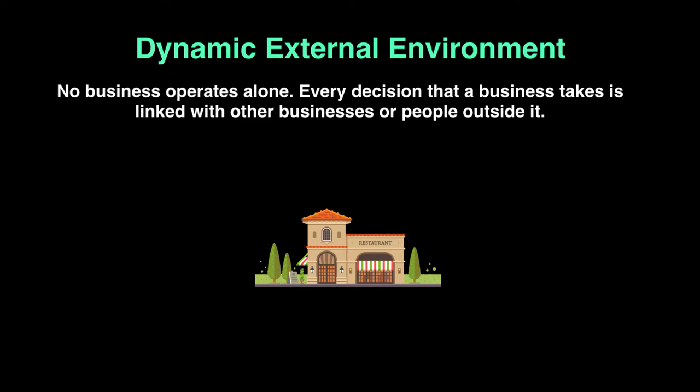Let's say we are a restaurant owner and we'd like to grow — open more branches. That's a good thing, but there are things happening around the business that we must consider. The concept we'll be discussing is called a PEST analysis — P, E, S, T.